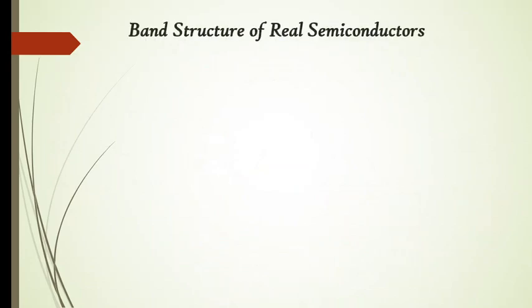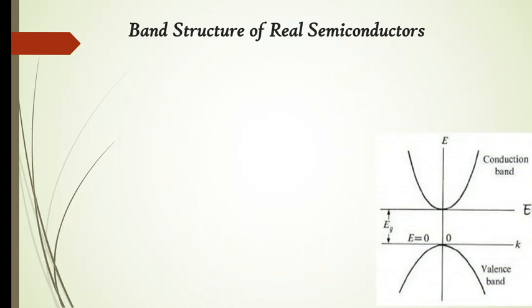In order to study these transitions, we first need to know the band structure of different types of semiconductors. In general, we construct a conduction band and a valence band in a parabolic nature. Along the y-axis is energy, and along the x-axis is the wave vector k. So a band structure or band diagram is always an E versus k diagram. The relation between them is: E equals ℏ²k² divided by 2m*, where k is the wave vector and m* is the effective mass. So E is directly proportional to k², giving a parabolic nature.